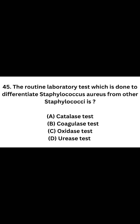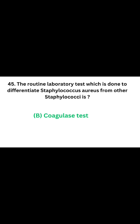Question number 45. The routine laboratory test done to differentiate Staphylococcus aureus from other Staphylococci. Option A: Catalase test. Option B: Coagulase test. Option C: Oxidase test. Option D: Urease test. The correct answer is Option B, Coagulase test. Staphylococcus aureus is Coagulase positive.